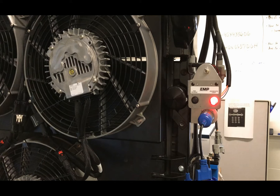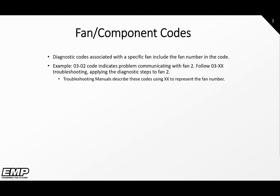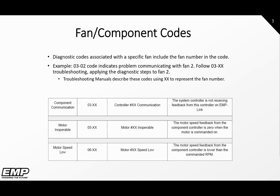If there are any active diagnostic codes, utilize the service tool to troubleshoot the active code. Some codes will be specific to individual fans and will include the fan number in the code. For example, 03-02 is a loss of communication with fan two code. When looking up the code in the troubleshooting manual, it will be written as 03-XX, where XX will be the fan designator. Looking at this table, there are three codes specific to individual components: 03 codes for loss of communication, 05 codes for motor inoperable, and 06 codes for when the component motor speed is lower than the commanded speed.